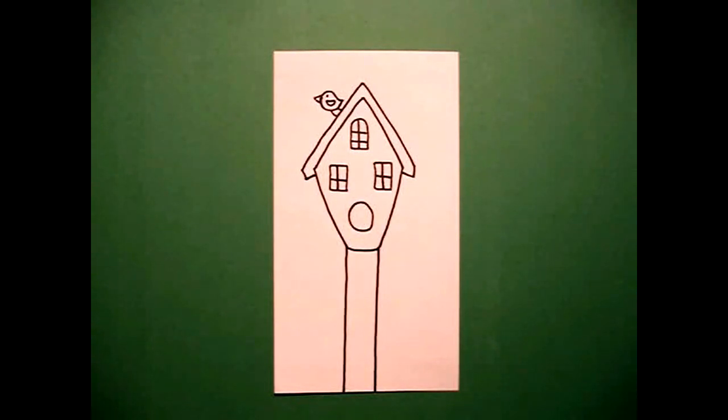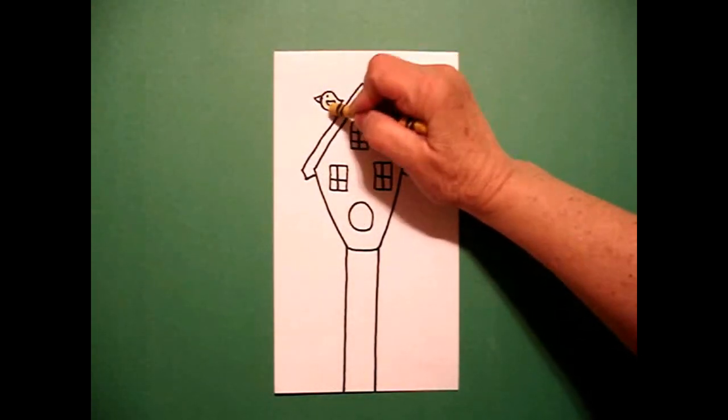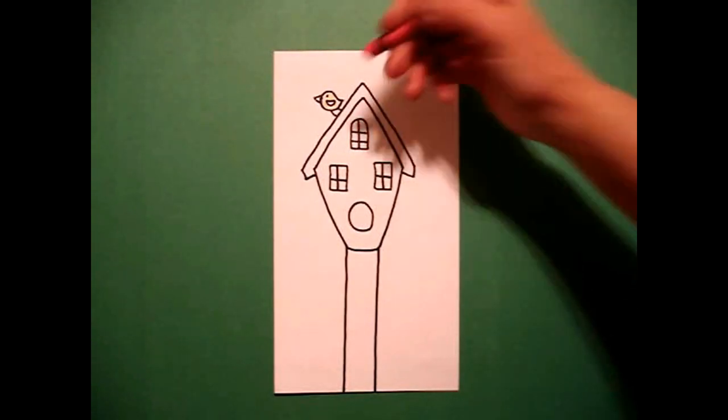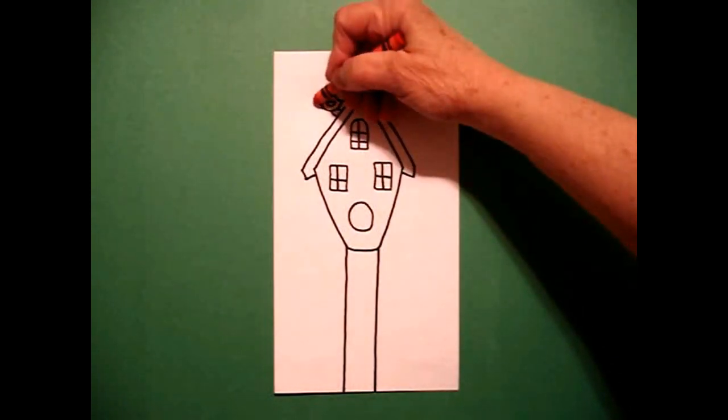Alright, let's see how we're going to color this in. I'm going to start with my little bird, so I'm just going to put a pop of color. So I'm going to make his little body yellow. I'm going to add a little pink wing and a little orange beak. You can do him any color you want.